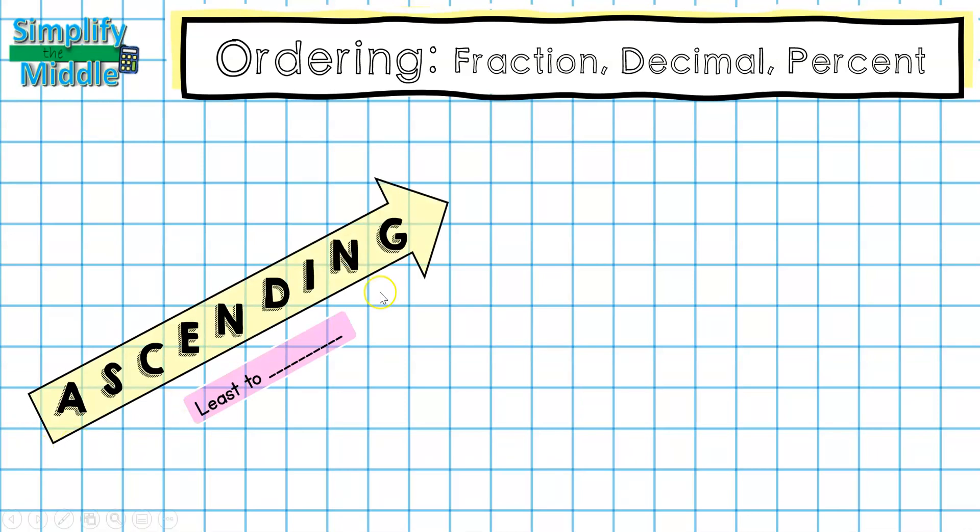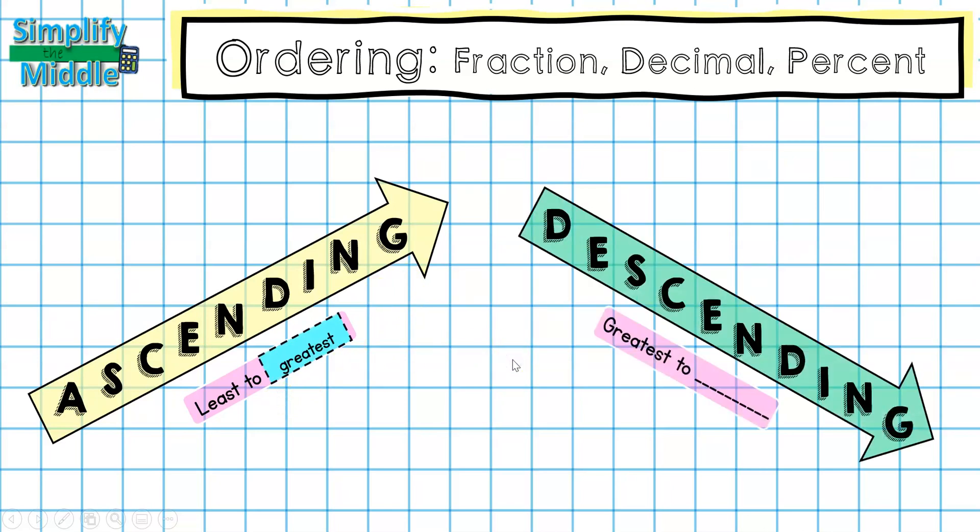One type of order is ascending order, and this order is going from least to greatest. Another type of order is descending order. This is going from greatest to least. We can keep these separate in our mind by remembering that the d for descending is going down.